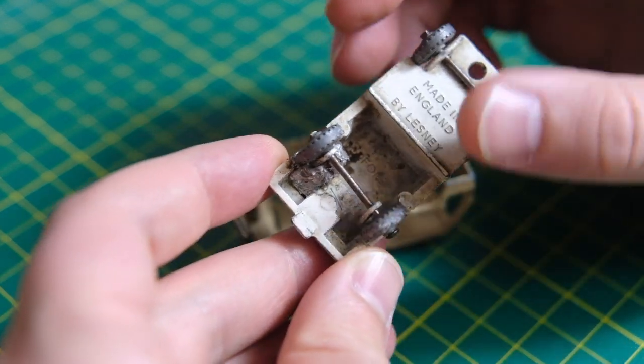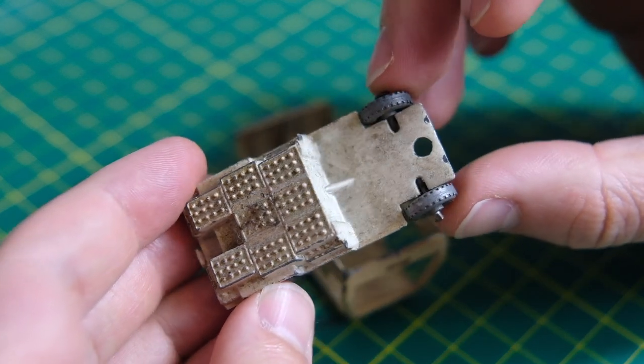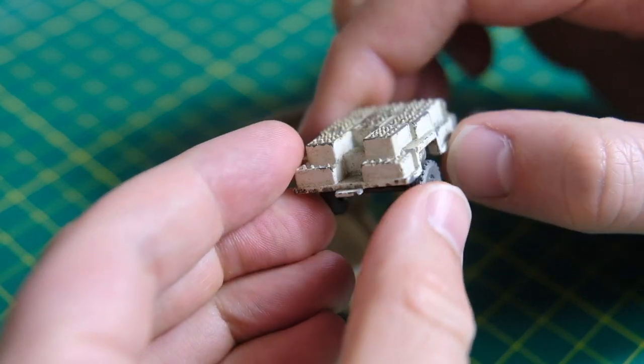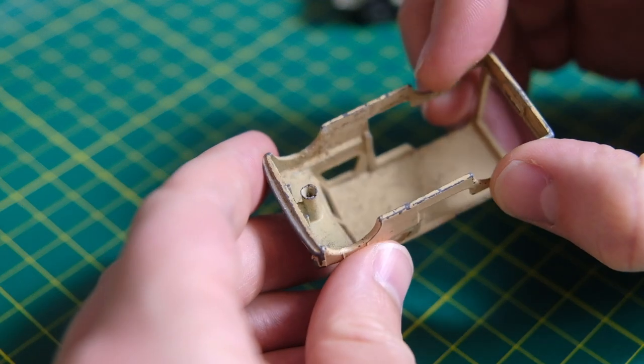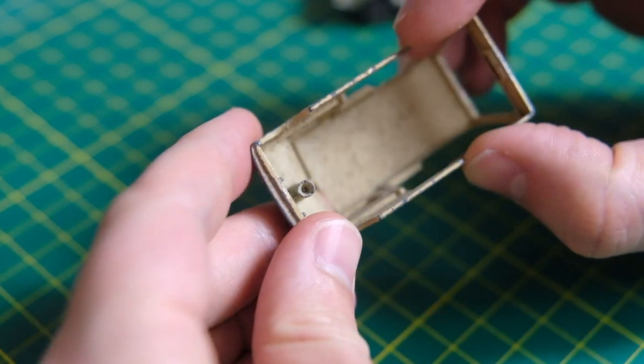Matchbox already had the 7A Horse Drawn Milk Float in the range when the Bedford came along having been introduced in 1954. Interestingly both were deleted from the series in 1961 when the 21C Commer bottle float was released.